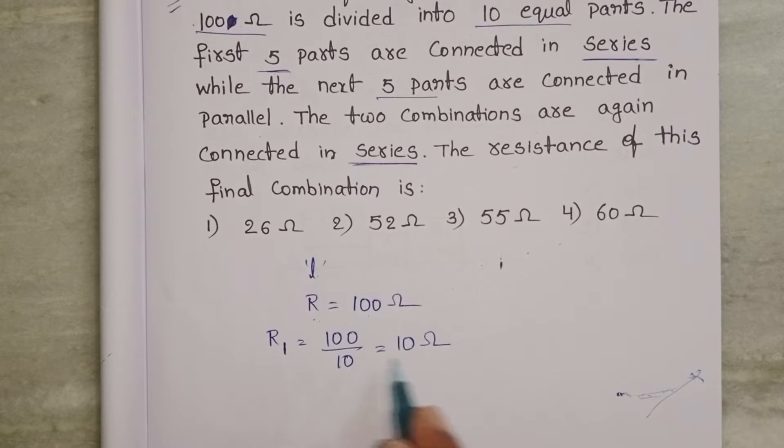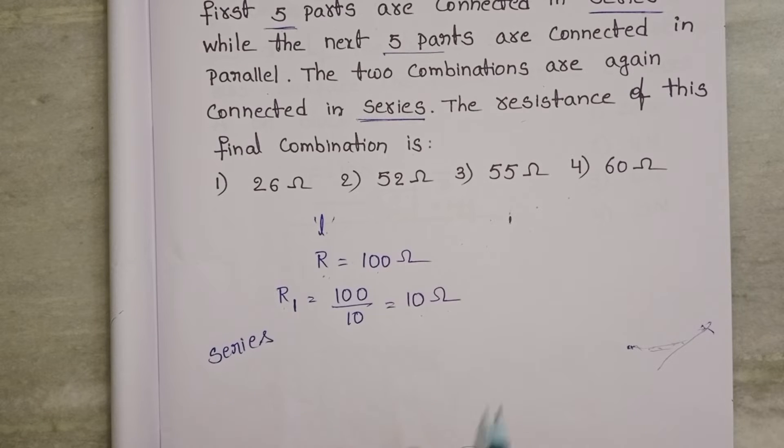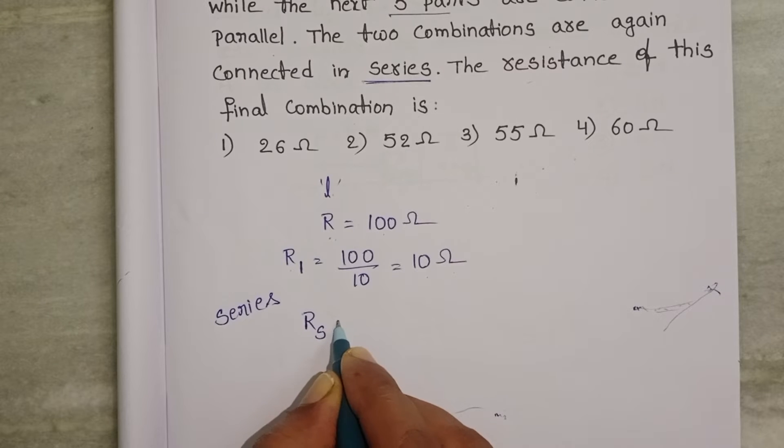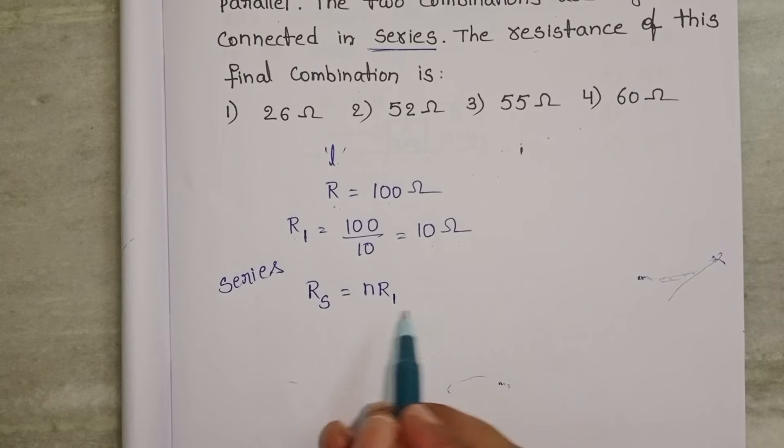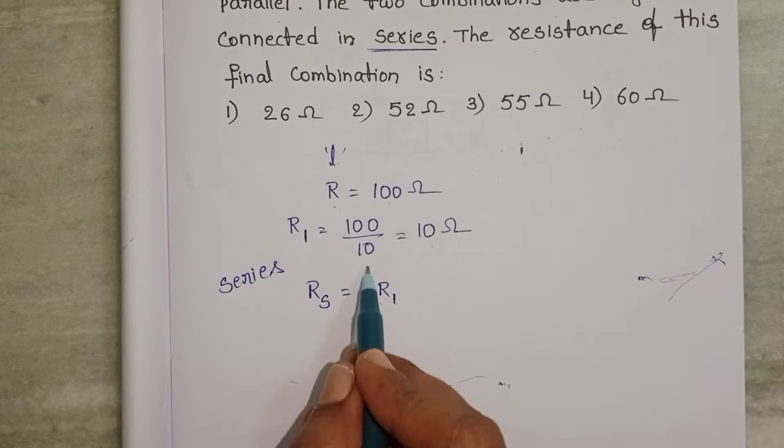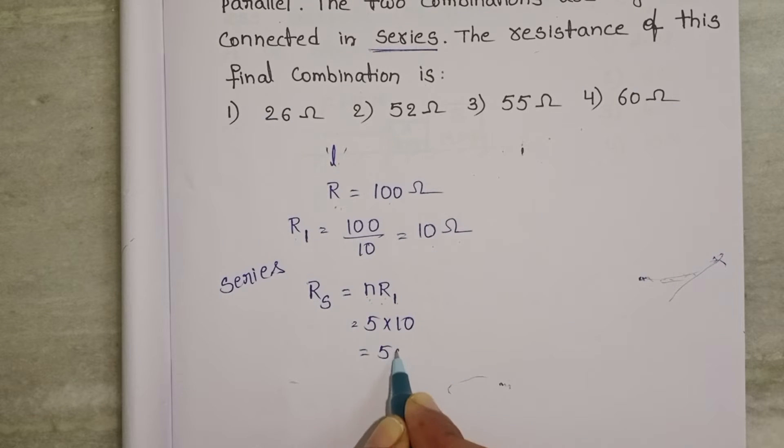So each part has resistance of 10 ohm. Now the first 5 parts are connected in series. When 5 resistors are connected in series, the equivalent resistance equals the number of resistors times the resistance of each resistor. Here all resistors have the same resistance. Rs equals 5 into 10 equals 50 ohm. So the first 5 parts have resistance of 50 ohm when connected in series.